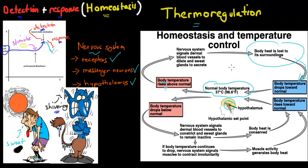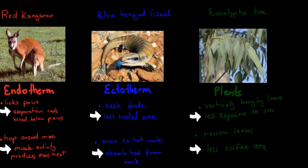Thermoregulation is the idea that we can maintain our own body temperatures, keeping a constant internal environment — which is good for metabolic function and enzymes. Some animals can actually do this. For example, the red kangaroo is called an endotherm — 'endo' means inside, 'thermo' means temperature. These animals can control their own internal temperature through different mechanisms, so endotherms do perform homeostasis.